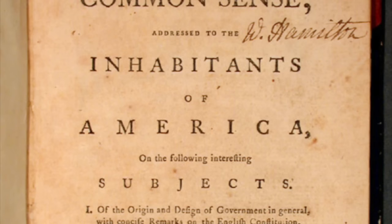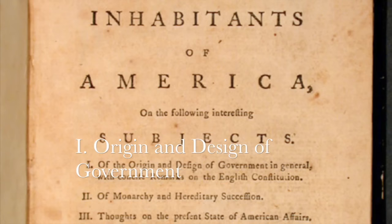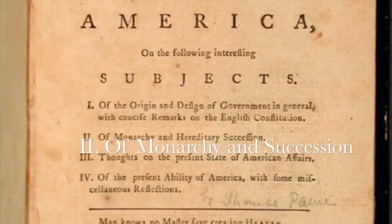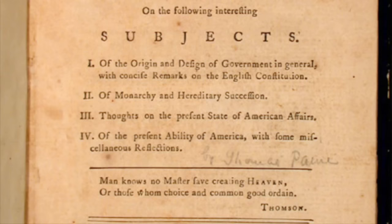The first section was called Origin and Design of Government, and here he makes the case that elections are the right thing for all governments because they represent the people. In the second section, titled Of Monarchy and Succession, he makes the argument that hereditary kings are not the way to go for governments. And he has probably one of his most famous lines of the whole document: 'Of more worth is one honest man to society and in the sight of God than all the crowned ruffians that ever lived.'